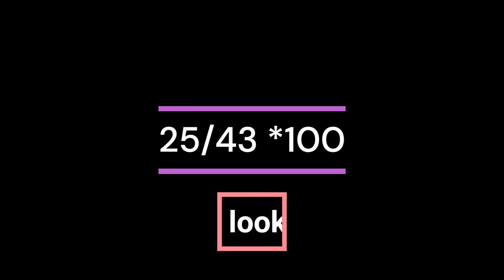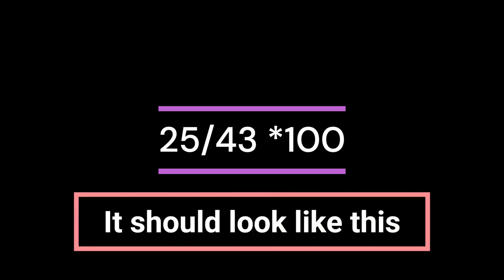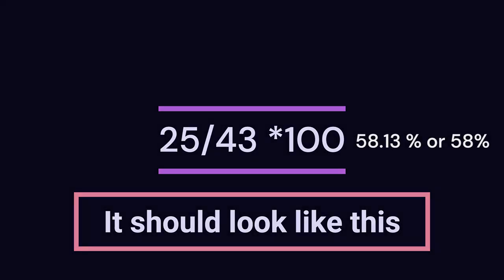First, you need to get the score. For example, I got 25 wrong from a test with 43 questions on it. Then I would divide it — 25 divided by 43 — and then multiply by 100. And there you go. It's your grade.